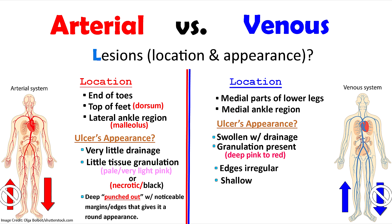Venous ulcers tend to be located on the medial parts of the lower legs below the knees and the medial malleolus region — the inside of the ankle, compared to arterial which is on the lateral side. They tend to appear swollen; the skin will be tight, there will be a lot of edema, and drainage and granulation will be present. The reason is that we have blood flow going to these wounds — we don't have a perfusion issue, just an issue with the veins returning blood.